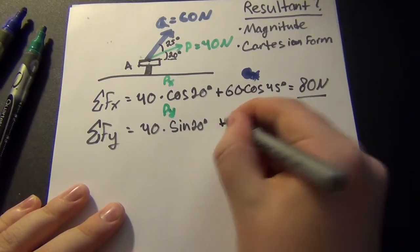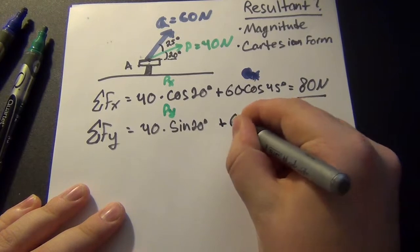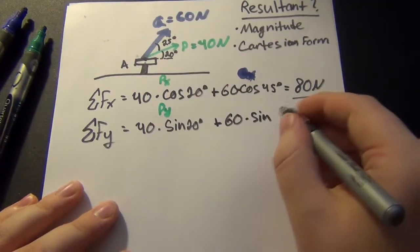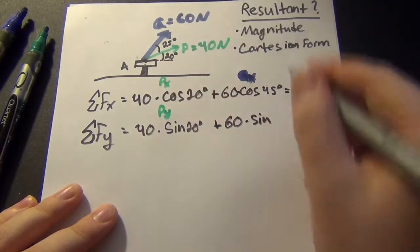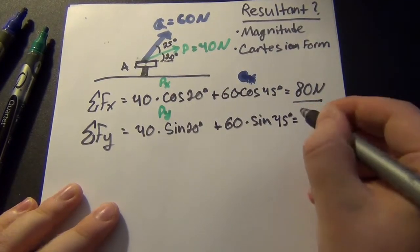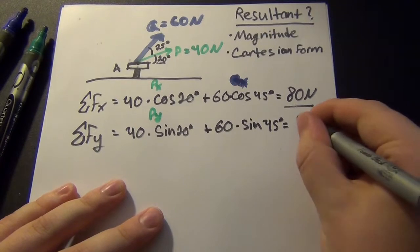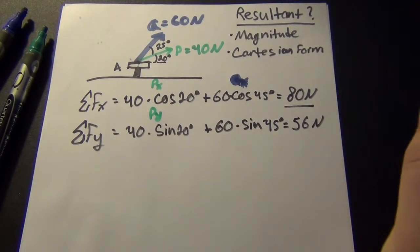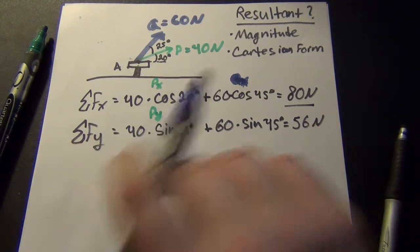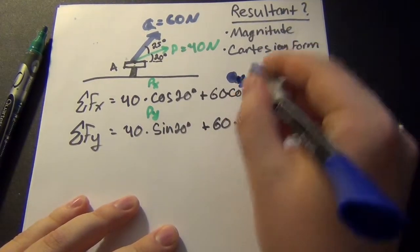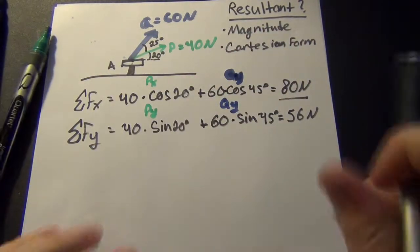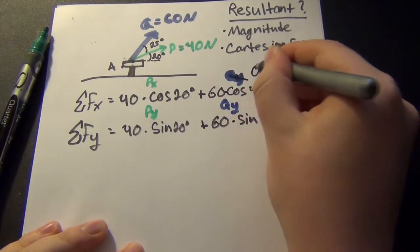And right here is the Y component of P. And then now we're just going to add the Y component of Q, which is 60 times the sine of its respective angle. And from the X axis of course, sine of 45 degrees, and when you do the math out in the calculator it comes out to about 56 Newtons. I'm just rounding these to two significant figures to make it easier. And that's Q of Y.